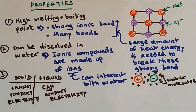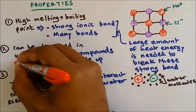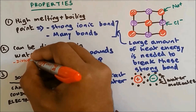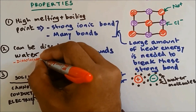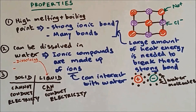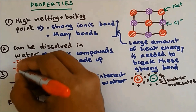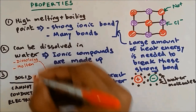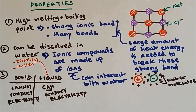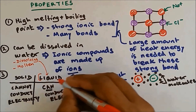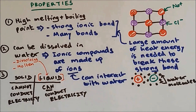We can make an ionic compound into a liquid by dissolving the ionic compound in water, or we can heat it, melting the solid ionic compound into a liquid to form molten liquid. This is how we can make the solid ionic compound into a liquid.